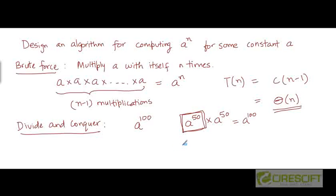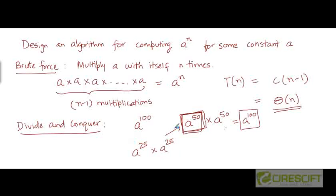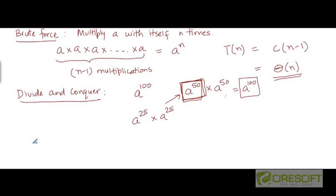And how can we compute a to the power 50? Let's assume that we know what a to the power 25 is. We can just multiply a to the power 25 by itself to get a to the power 50. So the task of computing a to the power 100 can be reduced to computing a to the power 50 with just one more multiplication needed after that. In general, for a to the power n where n is even, if we know a to the power n/2, we can just multiply a to the power n/2 by itself to get a to the power n.